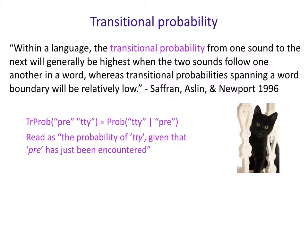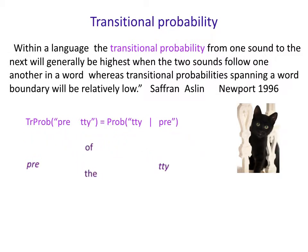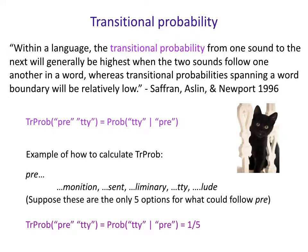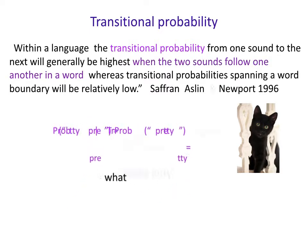What does this have to do with words? Let's consider the transitional probability of a word consisting of two syllables, like 'pretty.' What's the transitional probability of 'pre' followed by 'ty'? That's just the conditional probability of 'ty' given that you've seen 'pre.' How do we calculate that? Consider things that can follow the syllable 'pre': premonition, present, preliminary, pretty, prelude — five options. The transitional probability of 'pre' followed by 'ty' is one out of five.